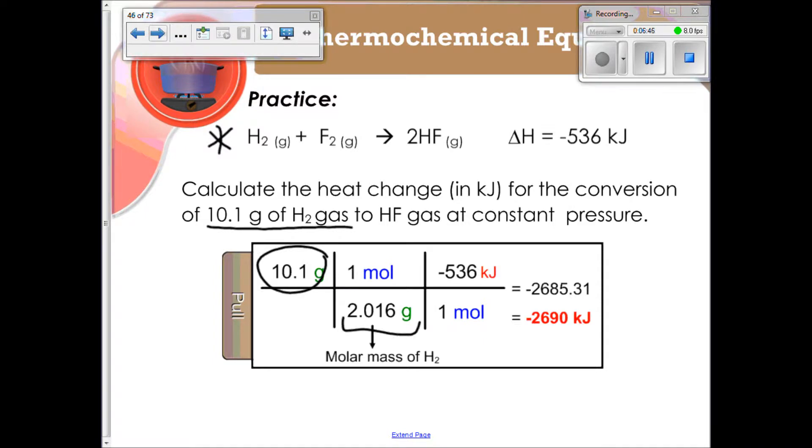And then in one mole of H2, we have negative 536 kilojoules. The enthalpy is not part of my thermochemical reaction. It's written off to the side like this, so because I'm not showing it as a product, I have to show that it's negative, which means it's being released.